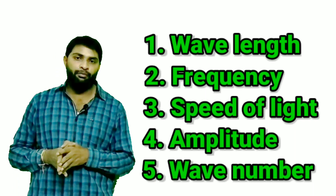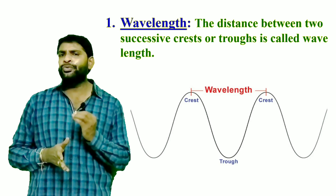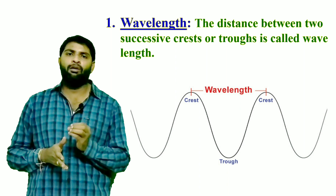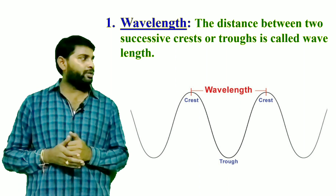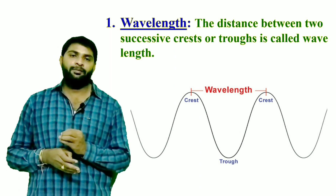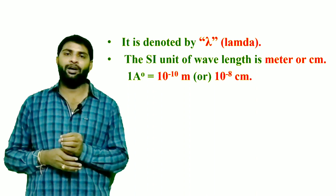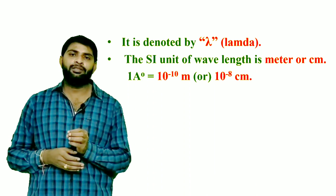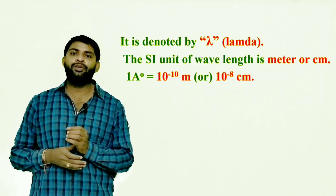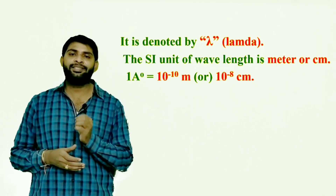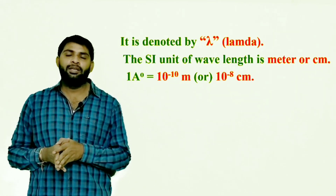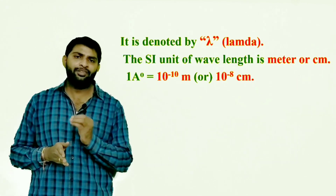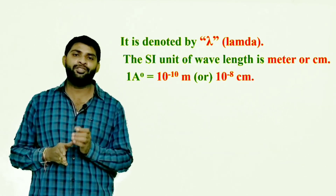First property — wavelength: the distance between two successive crests or troughs is called wavelength. Wavelength is generally denoted by the Greek letter lambda (λ). The SI unit of wavelength is meter or centimeter. Wavelength can also be expressed in angstroms, where one angstrom equals 10 to the power of minus 10 meters.